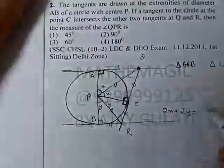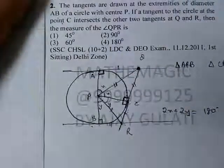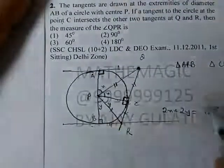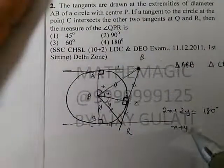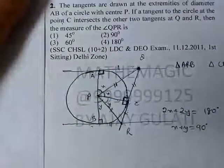Now what is 2x plus 2y? 180 degrees, this is a straight line. x plus y equals 90 degrees.